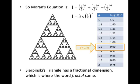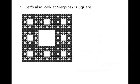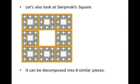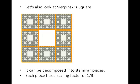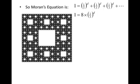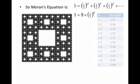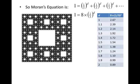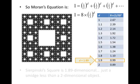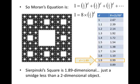By the way, the fact that it has a fractional dimension is where the word fractal came from. What about Sierpinski's square? We can break the big square into eight copies of itself, each one-third the size of the original, so the scaling factor is one-third. The Moran equation gives: 1 equals eight times (one-third) to the D. Making a table of values from D = 1 to 2, we find the value closest to 1 occurs around 1.9, and with more trial and error we get D equals 1.89. So Sierpinski's square is 1.89 dimensional — just a smidge less than a two-dimensional object.